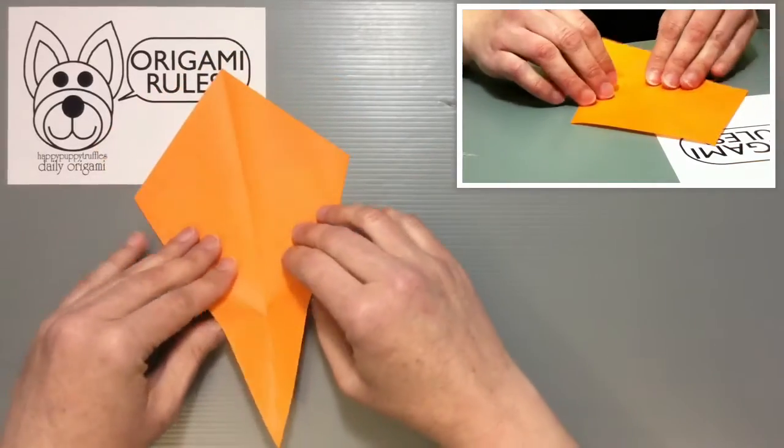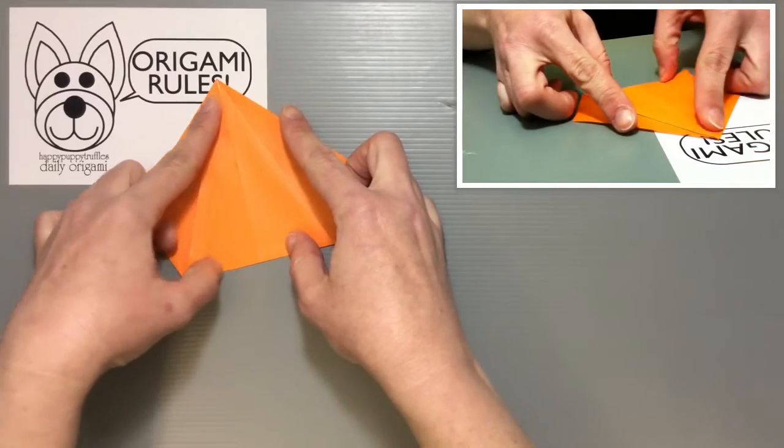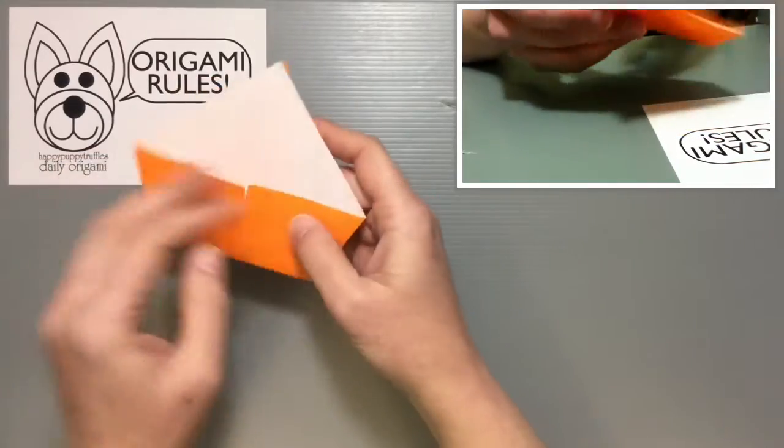Flip it over for a second. Go ahead and fold everything in half, bringing that tip right up to the top. Make a good crease and flip it over.